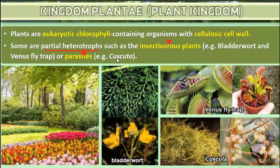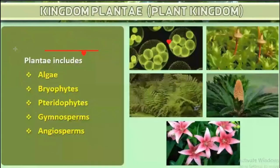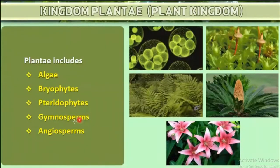An example of a parasitic plant is Cuscuta. Kingdom Plantae includes algae, bryophytes, pteridophytes, gymnosperms, and angiosperms. In the next chapter we are going to study all of these groups in detail.